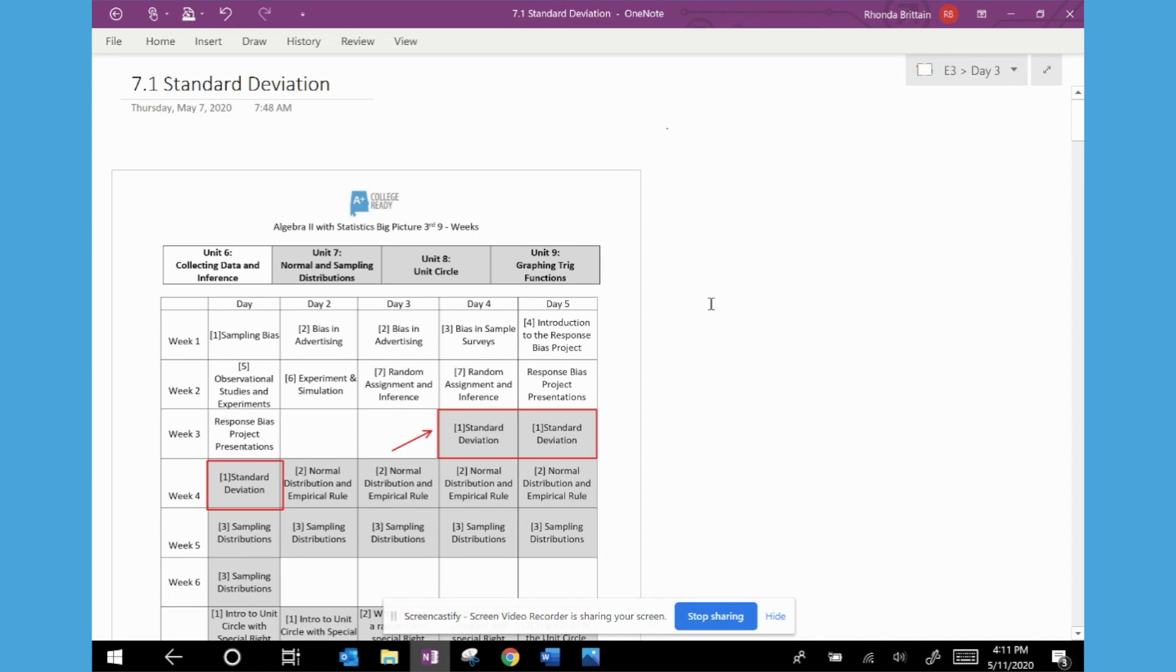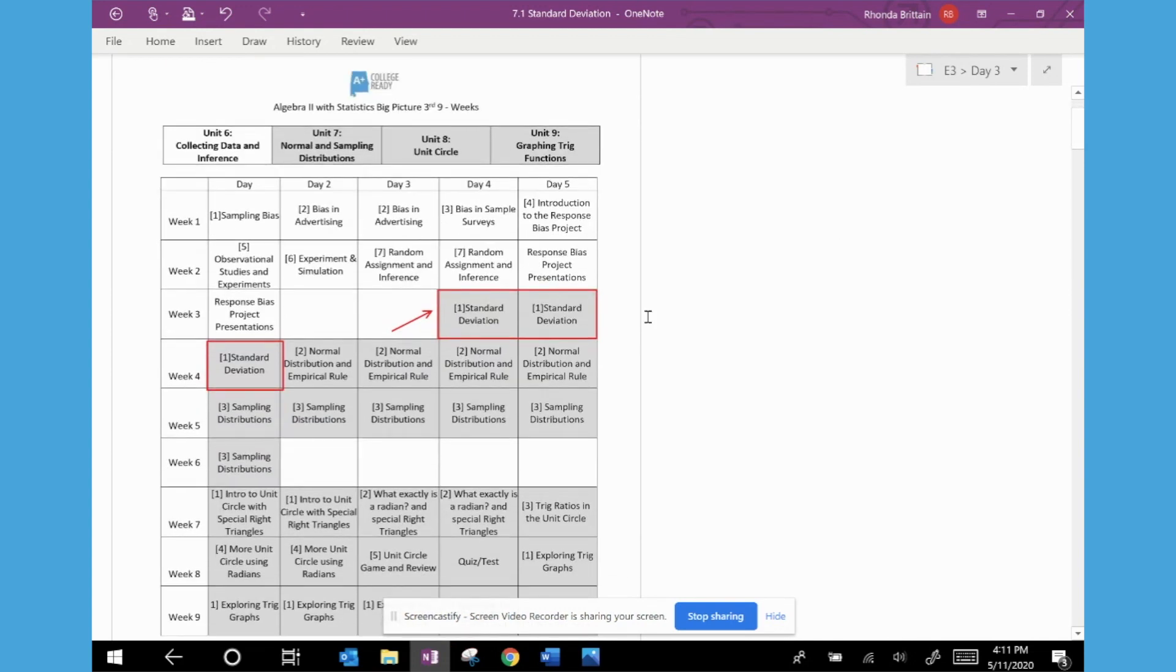And this understanding is imperative to complete the remaining lessons in the unit. So if they have a firm grasp and know the definition, then you might be able to start on lesson two, which is normal distribution and empirical rule.